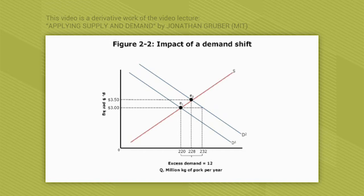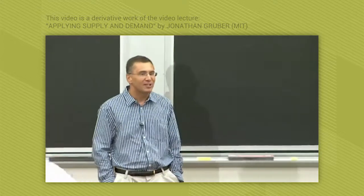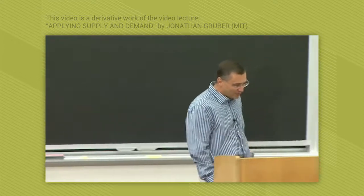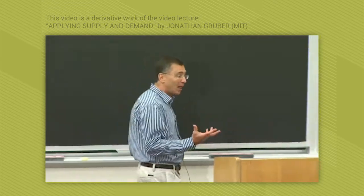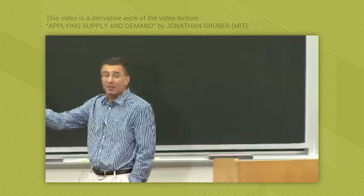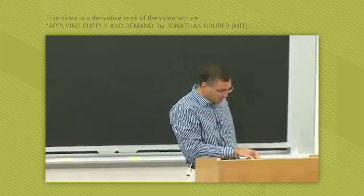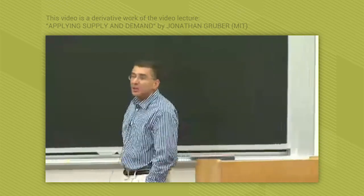Well, what would happen is — and these numbers are made up, just to illustrate an example — people would now say, at a price of $3 and this further-out demand curve (now I'm on figure 2-2), I want 232 million kilograms of pork a year. So basically, consumers say they want a lot more pork at that price. What you're going to have initially is excess demand, because at that price of $3, suppliers are only willing to supply 220 million kilograms.